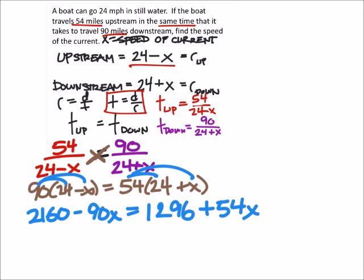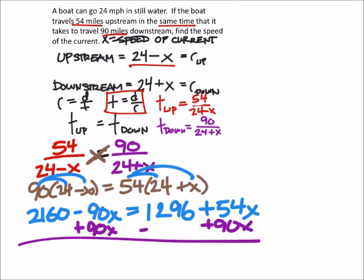At this point, I'm going to move all the x's to one side, and on the right side, that's where I'm going to move them. So I'm going to add 90x to both sides. And I'll also subtract 1296 from both sides.